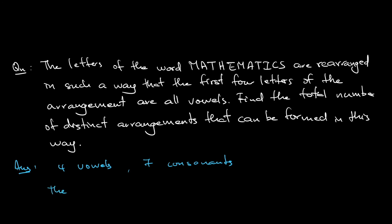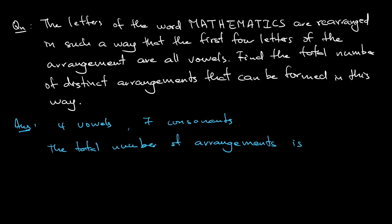So the total number of arrangements is 4 factorial, but like I say you have a duplicate of A. These are indistinguishable. So the first A and the second A is actually the same thing, correct? So I need to divide that by 2 factorial.